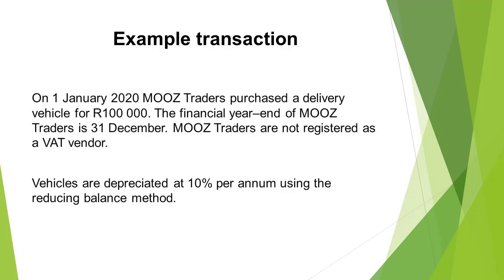For the purpose of this video, we will use the following transaction. On 1 January 2020, Moose Traders purchased a delivery vehicle for R100,000. The financial year end of Moose Traders is 31 December. Moose Traders are not registered as a VAT vendor. Vehicles are depreciated at 10% per annum using the reducing balance method.